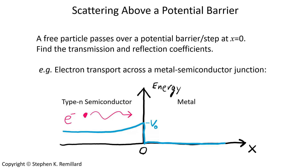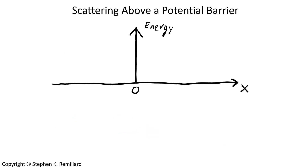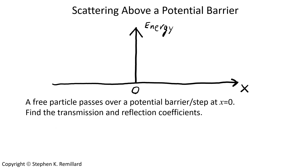That is the problem we will model right now. The energy experienced by a wave in one-dimensional space suddenly changes at x equals zero. It can either go up or down, so it is either a barrier in potential or a step in potential. And we want to find the transmission and reflection coefficients.